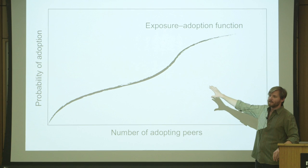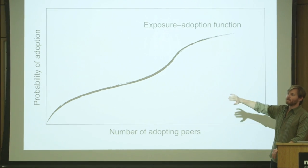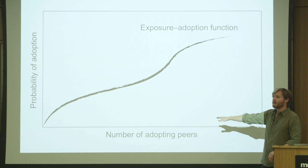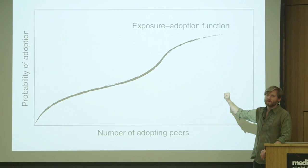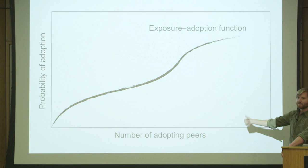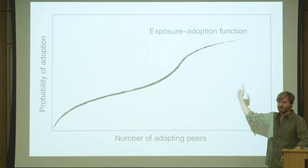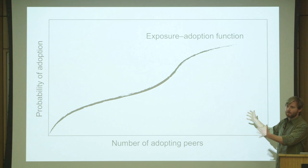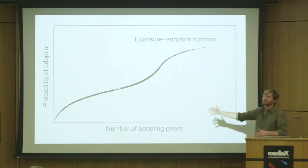If your peers are quitting smoking, are you quitting smoking? If your peers start playing a particular game on their phone, do you start playing that game also? This is a causal, individual-level function that we're interested in—this exposure-adoption function.